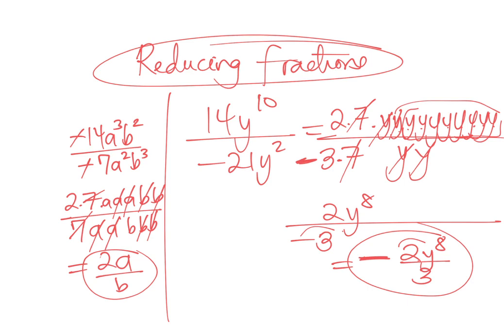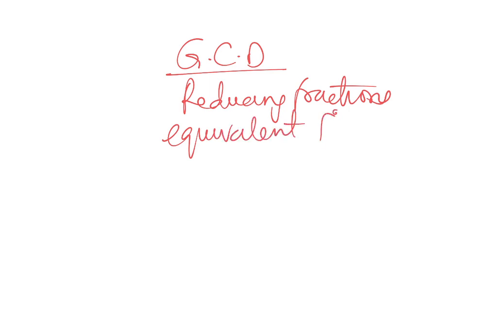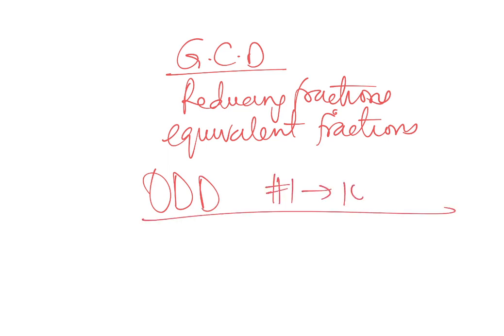We've covered greatest common divisor, reducing fractions, creating equivalent fractions, and reducing fractions to lowest terms. There are about 102 practice problems available. I encourage you to work through as many as you need — the odd problems from 1 to 101 are highly recommended. Number 101 is a word problem that can be done for fun. Feel free to email me with any questions on any section.